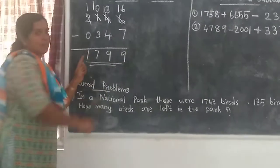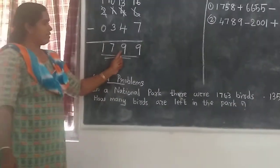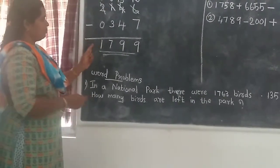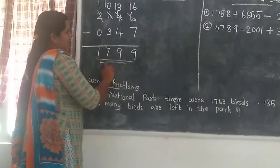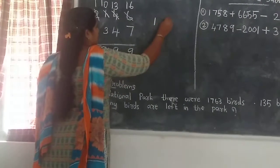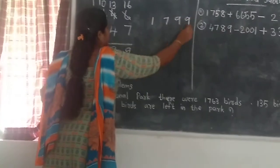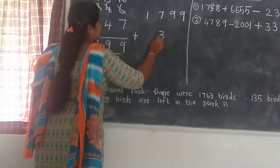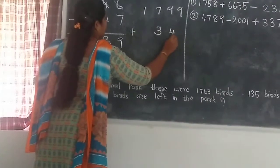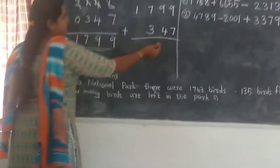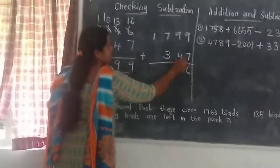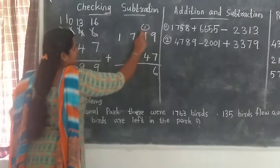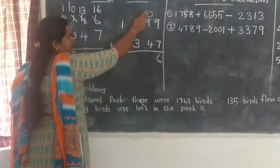So we get the answer 1799. Then for checking the subtraction, we first write the answer 1799, then we add the subtracted number 347. Starting from the ones: 9 plus 7 is 16. Write 6, carry 1. Then 9 plus 4 is 13, plus the carried 1 makes... we continue adding with remainders.